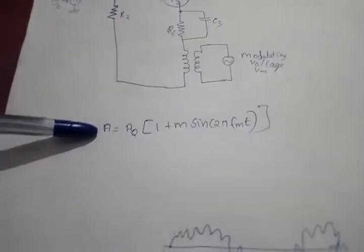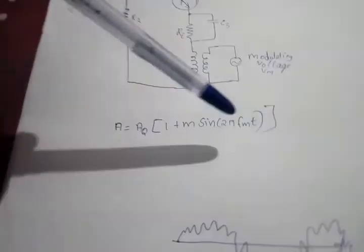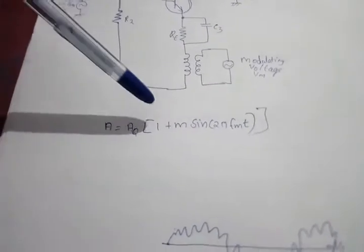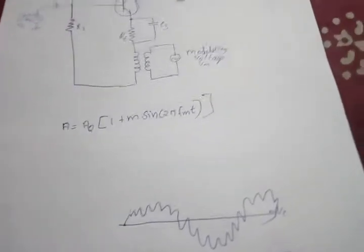The gain of the amplifier is given by A equals AQ into 1 plus M sine 2 pi FM T. Here AQ is the gain of the amplifier without the message signal. This is the equation of the message signal. You see here FM is the frequency of the modulating signal. Modulating signal and message signal are the same.